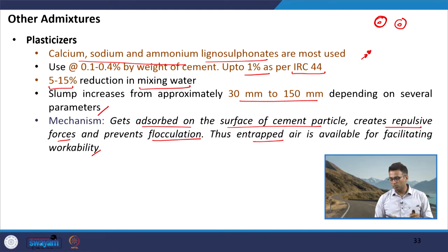Because flocculation is prevented, the entrapped water — which would otherwise be trapped inside agglomerated cement particles and unavailable — is now released and available to facilitate workability. Since we are able to separate the particles using surfactant materials or plasticizers, this entrapped water improves the workability of the mixture.